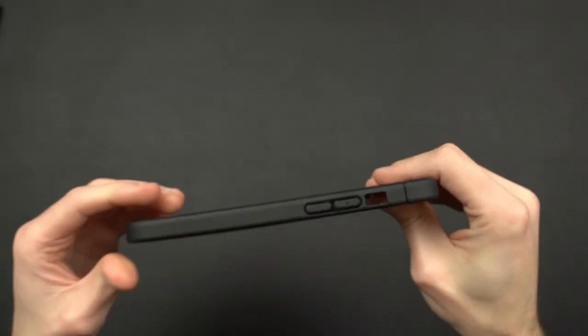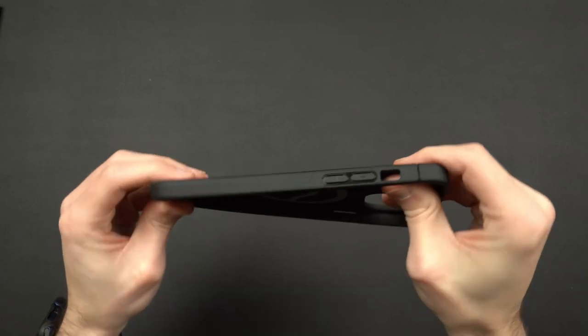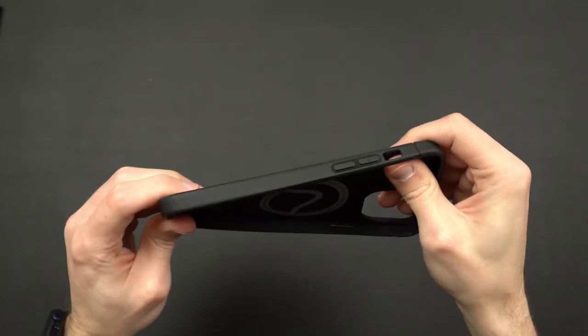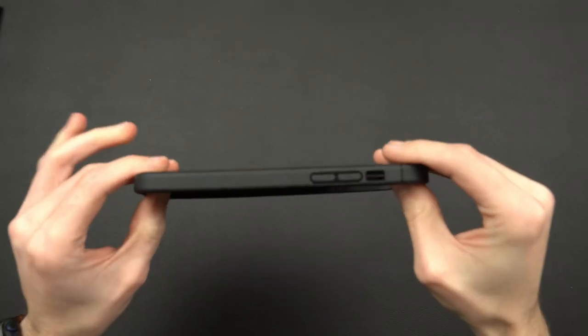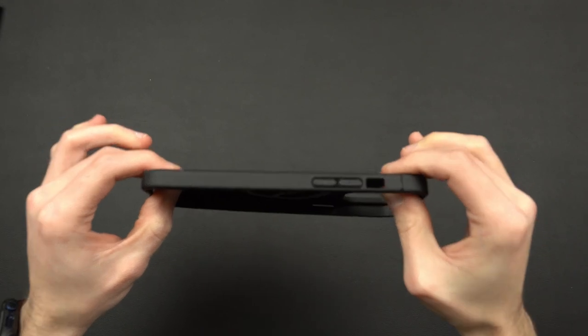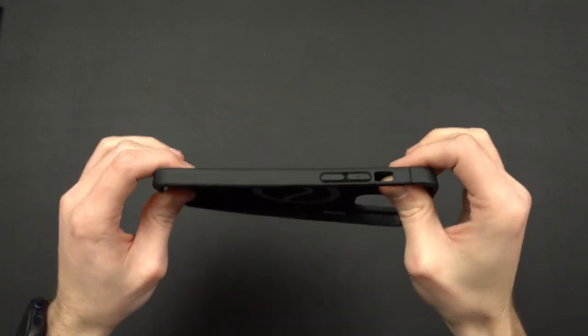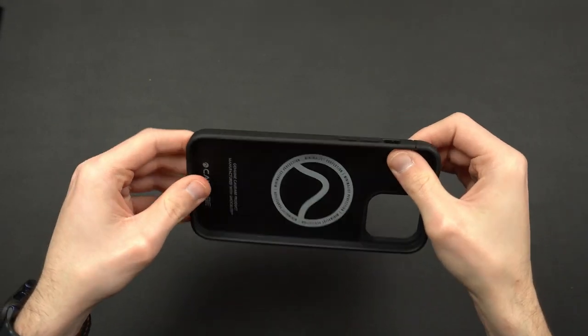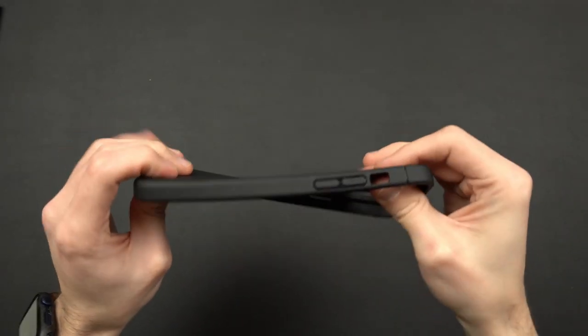As far as how rigid the case is, I mean it's definitely a flexible case, but once you pop your phone in it, it immediately stiffens out. So you don't have to worry about it popping off the phone or drooping or pulling and stretching or anything like that. It's a very sturdy case once it's on the phone.